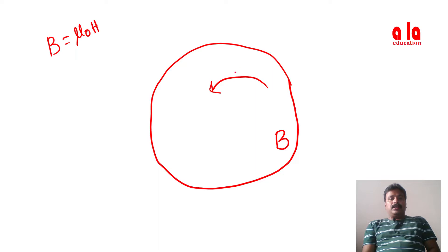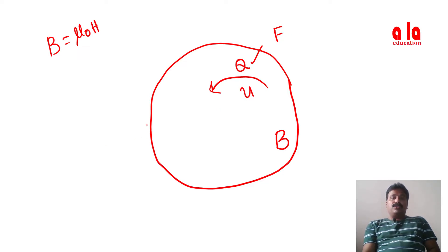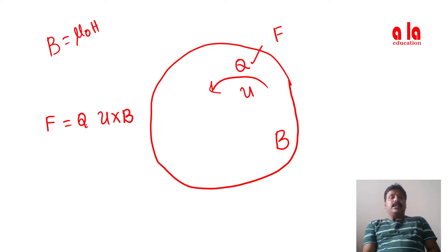Consider a charge particle q moving with velocity u in this magnetic field. The charge particle q moving with velocity u experiences rotation in the magnetic flux density B field. The force it experiences is equal to q into (u cross B). This is the Lorentz force equation.